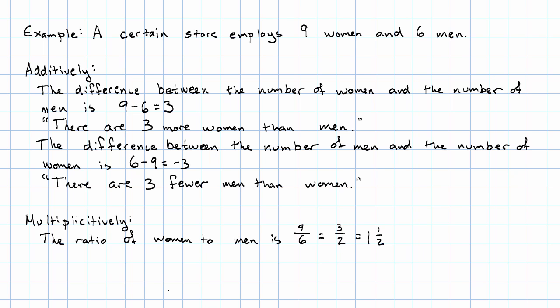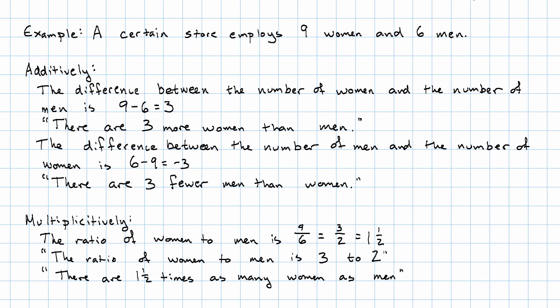How would we describe that in English? We might use the word ratio: the ratio of women to men is three to two. That means for every two men there are three women, or we might say there are one and a half times as many women as men.